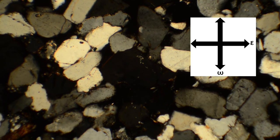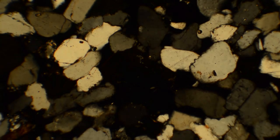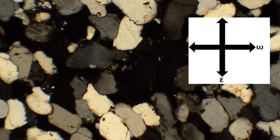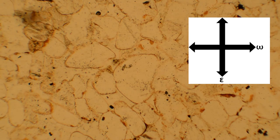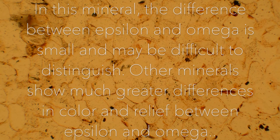Now I can take out my accessory plate and the cross polarizer, and describe the mineral's color and relief in plain polarized light. We need to align our mineral grain such that epsilon is vibrating in the same direction as the lower polarizer. Here, the mineral is colorless with low relief. Now I go back to cross polarized light and align omega with the lower polarizer. In plain polarized light, I see that this mineral is colorless with low relief along omega. In this mineral, the difference between epsilon and omega is small and may be difficult to distinguish. Other minerals show much greater differences in color and relief between epsilon and omega.